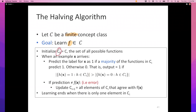By doing this again and again, halving keeps only those functions that have agreed with all examples so far. The prediction is made by majority vote: when a new example comes in it asks every function for a label and picks the most common one. Any questions about the mechanics of the halving algorithm or the concept of mistake-bound algorithms?